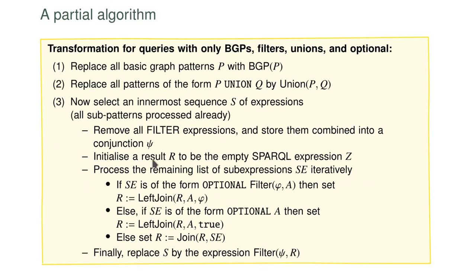So this is how we process all the sequence of expressions — basically building up a large join or left join nested here. Finally, after we did all of this, we remember the filter that we stored aside when we started and put it around the whole expression. This would be an algorithm for formally doing such a translation. But as I say, in many cases it will be quite easy to just give the algebra expression directly without this approach.